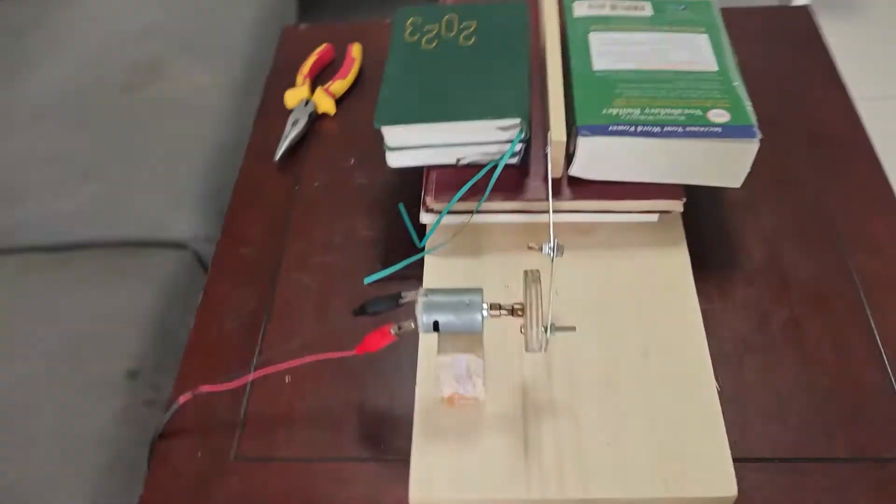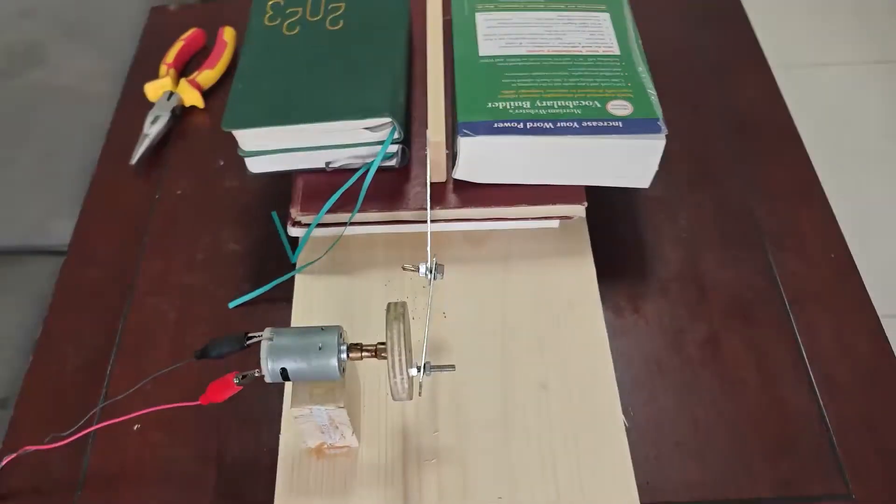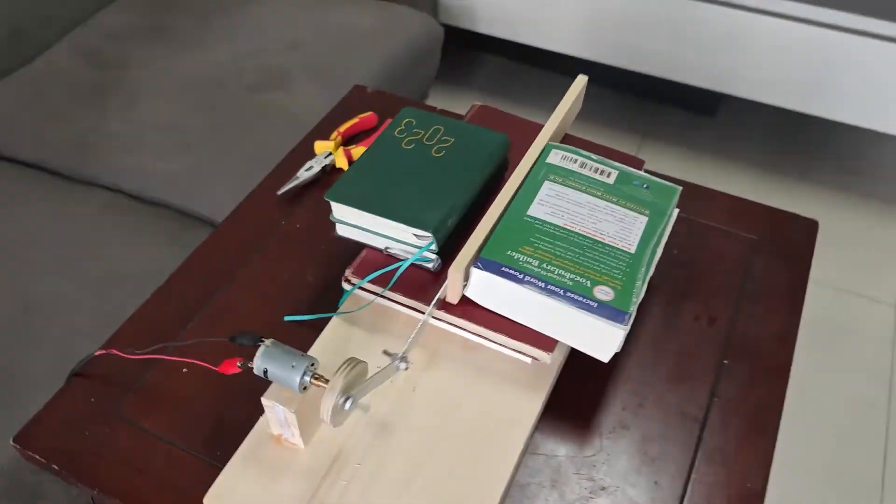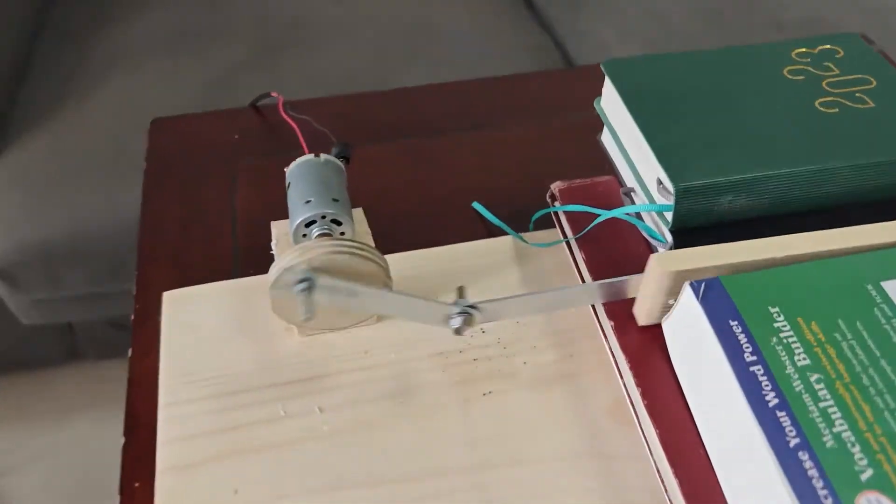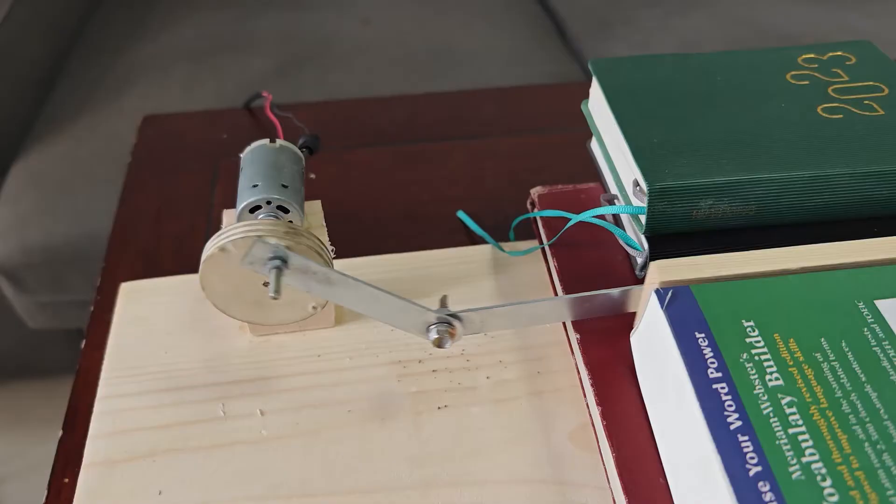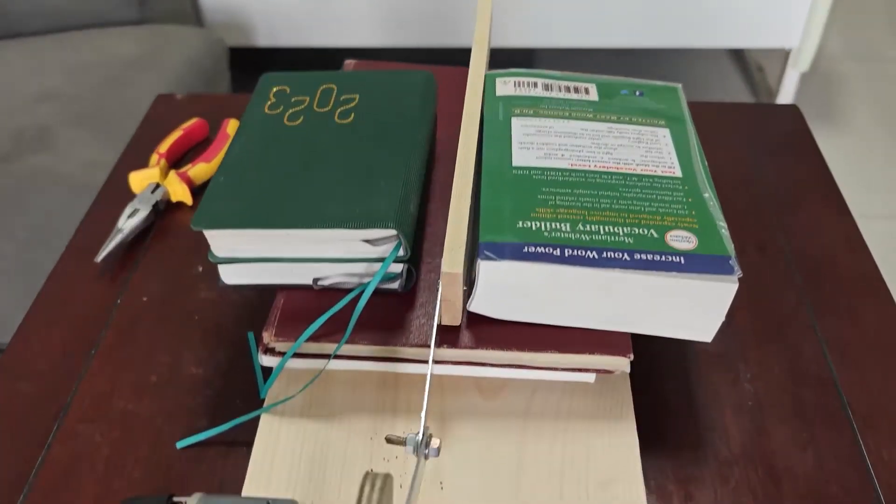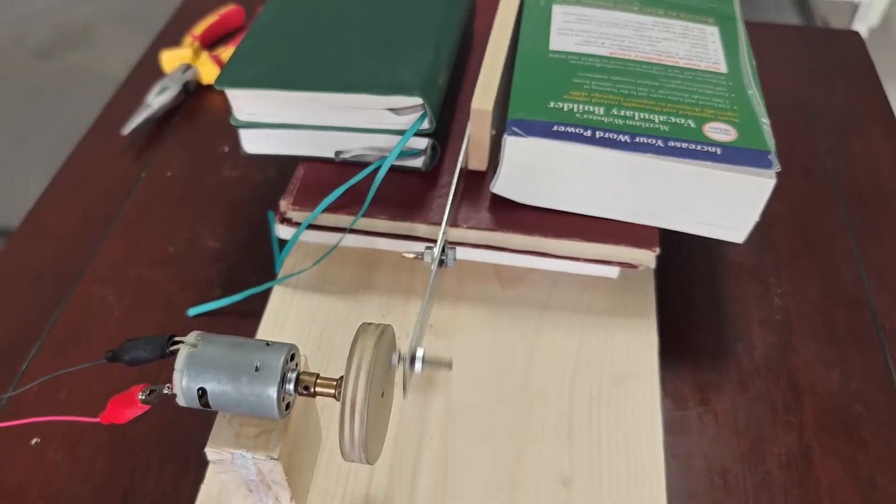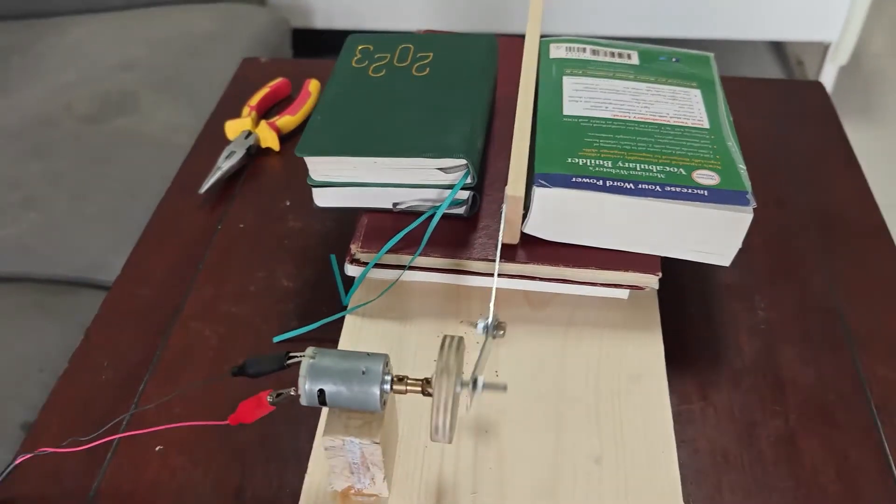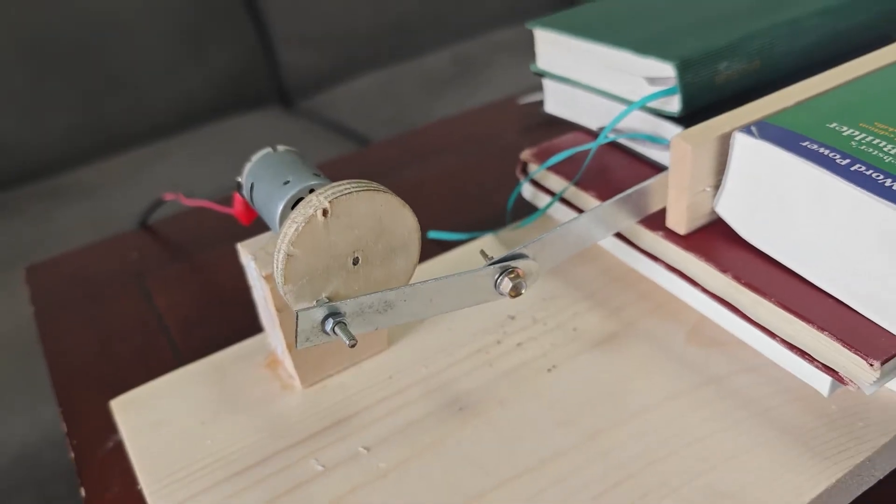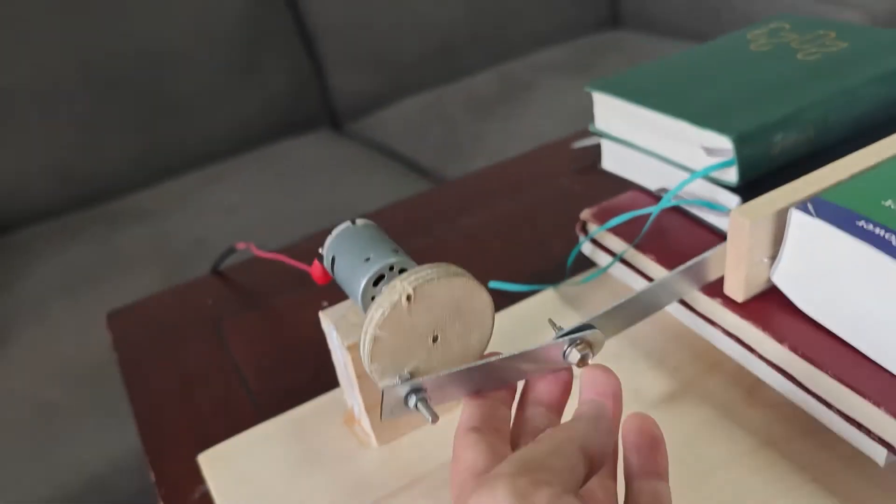In this video I'm going to show you how we can convert circular motion to linear motion. Let's connect the power supply. In order to make this crank work, two conditions have to be met.